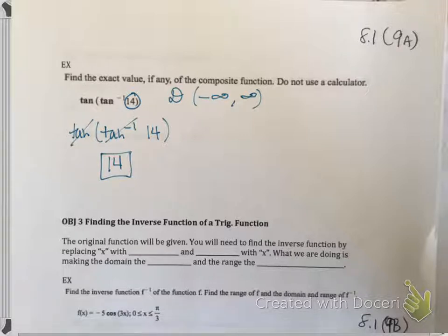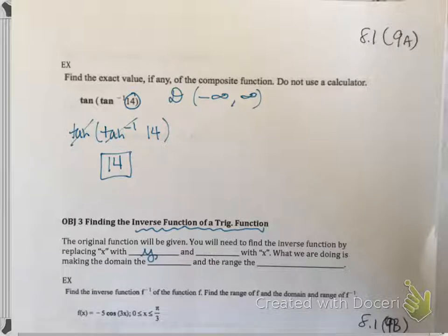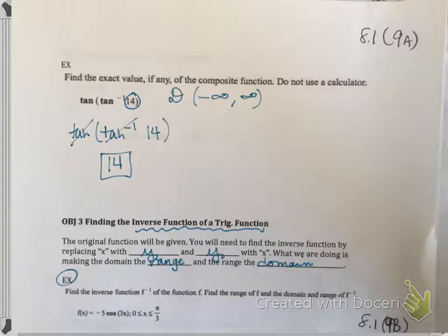For objective 3, they're asking you to find the inverse function of a trig function. You may remember from college algebra: to write an inverse function, you replace x with y and y with x, making the domain the range and the range the domain. This next example asks you to find the inverse function of f, plus the domain and range. The function is f(x) = -5 cosine(3x), where x is between 0 and pi over 3.